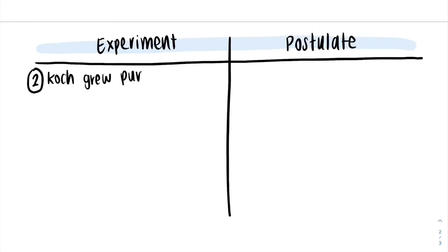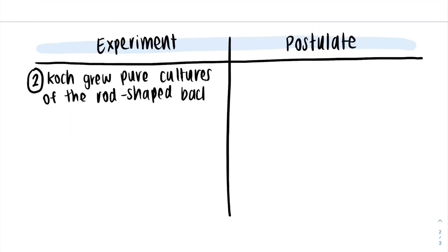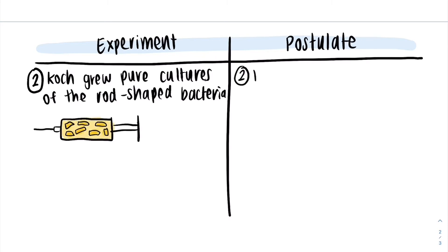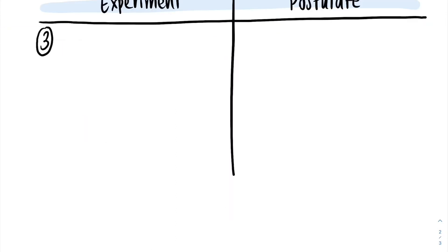Next, Koch grew pure cultures of the rod-shaped bacteria. This led to his second postulate, which states that a pure culture of the microorganism is required.